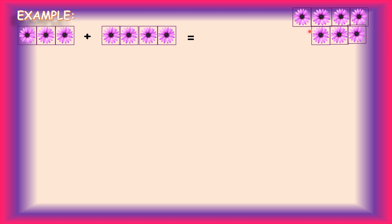Let's count: one, two, three, four, five, six, seven. After adding three flowers and four flowers together, we get seven flowers. In the same way, children, in math we bring numbers together. So three plus four equals seven.